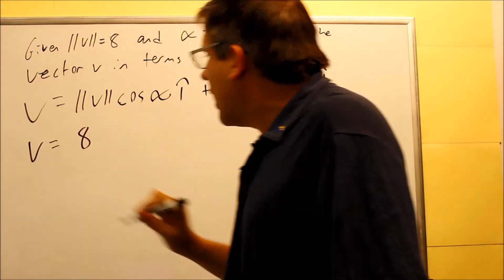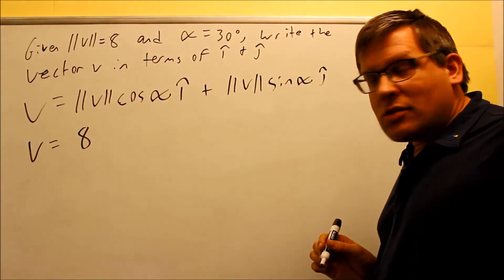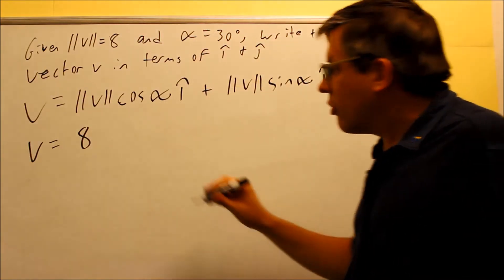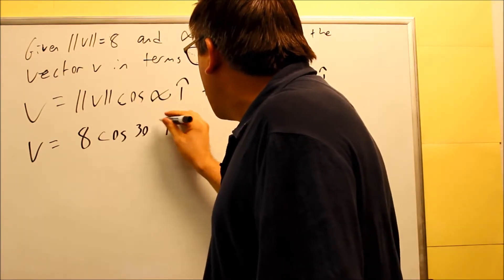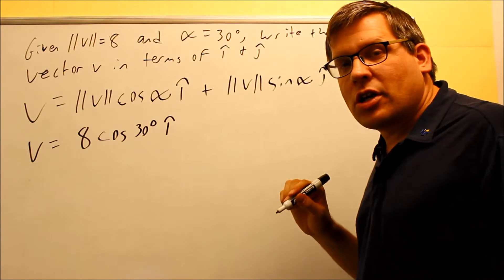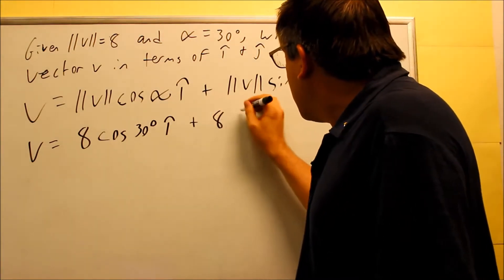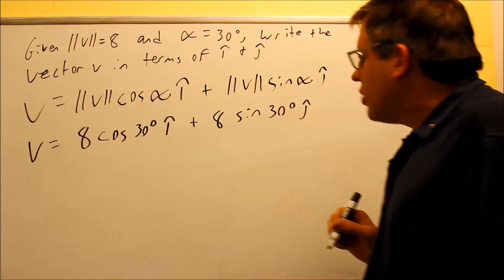So we're given that magnitude of V is 8 and alpha is 30 degrees. So all we've got to do is simply put that information in and we're going to simplify it. That will give us our I and J components, 8 cosine 30 degrees I, 8 sine 30 degrees J.